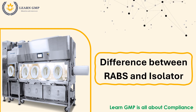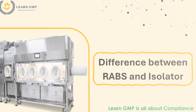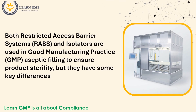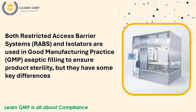Both Restricted Access Barrier Systems, RABS, and Isolators are used in good manufacturing practice, GMP, aseptic filling to ensure product sterility, but they have some key differences.